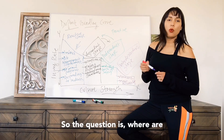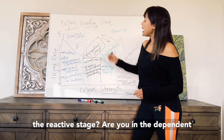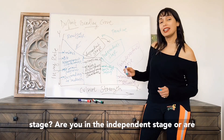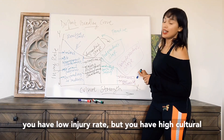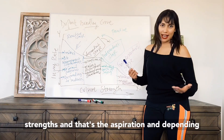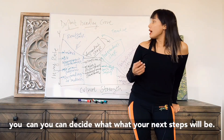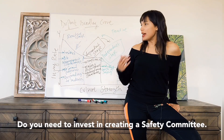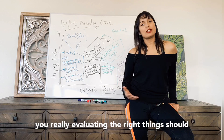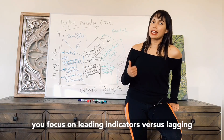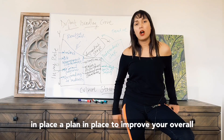So the question is: where are you? Where is your safety culture? Are you in the reactive stage, the dependent stage, the independent stage, or the interdependent stage? The interdependent stage is where we want to be — low injury rate and high cultural strength. Knowing where you are can help you decide your next steps: do you need to invest in creating a safety committee, evaluate your metrics, or focus on leading indicators versus lagging indicators? Really knowing where you are can help you put a corrective action plan in place to improve your overall safety culture.